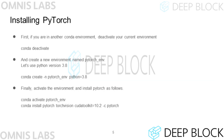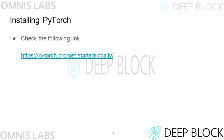Now, let's install PyTorch. First, if you have an active Conda environment, deactivate it with the Conda Deactivate command, and create a Conda virtual environment called PyTorch Env by fixing the Python version to 3.8. Then, activate the virtual environment and install PyTorch by entering the command below. This command works on computers with NVIDIA GPU devices. For more detailed installation instructions, please refer to the following link.